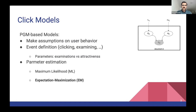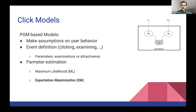In this work, we focus on click models that are based on probabilistic graphical models. These models consist of some events that are defined — for example, the event of a user clicking on a document or examining a document — based on assumptions about user behavior. We process these models with parameters that we need to estimate. For example, in this figure you can see a simple illustration of the Position Based Model (PBM), which has two types of parameters: attractiveness and examination. We estimate these parameters using algorithms such as maximum likelihood or expectation maximization. Previous research shows that models trained with EM generally perform better, so in our work we focus on EM-based click models.